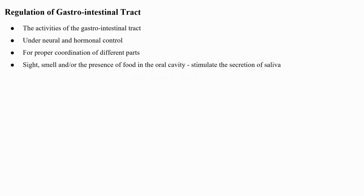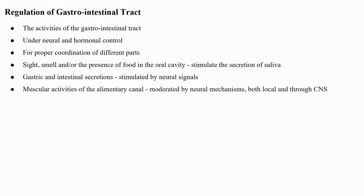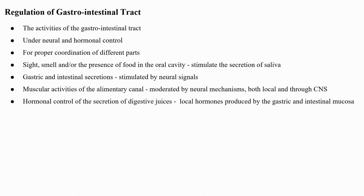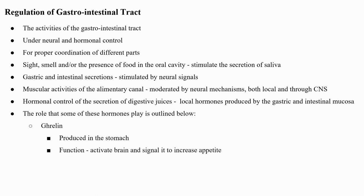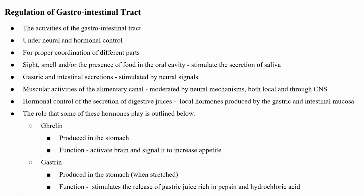The activities of the gastrointestinal tract are under neural and hormonal control for proper coordination of different parts. The sight, smell, or presence of food in the oral cavity can stimulate the secretion of saliva; gastric and intestinal secretions are similarly stimulated by neural signals. Hormonal control of digestive juice secretion is carried out by local hormones produced by the gastric and intestinal mucosa. Ghrelin is produced in the stomach and signals the brain to increase appetite. Gastrin is produced in the stomach when it is stretched and stimulates the release of gastric juice rich in pepsin and hydrochloric acid.